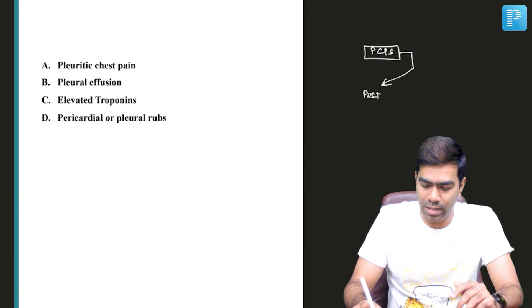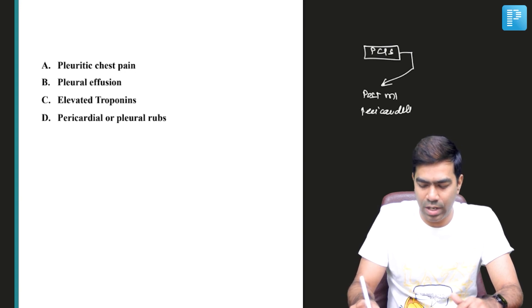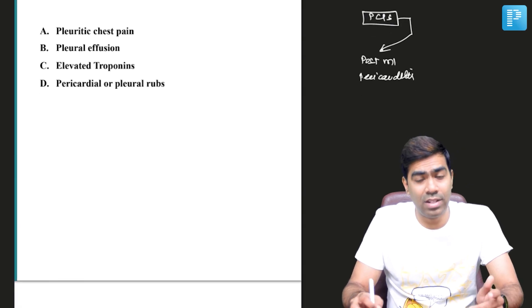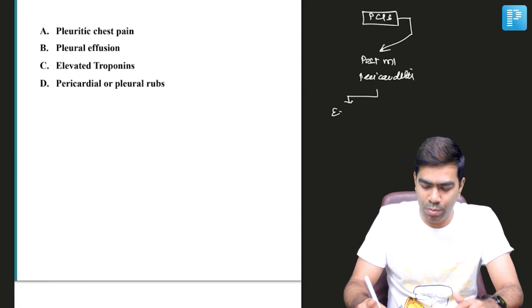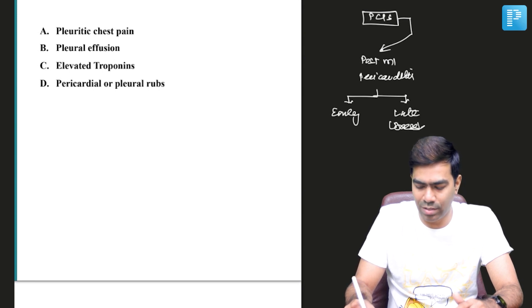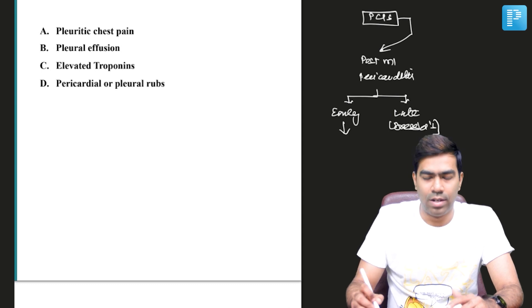The first type is post-MI pericarditis, which usually happens after STEMI. Post-MI pericarditis can be further subdivided into early post-MI pericarditis and late post-MI pericarditis, which is also referred to as Dressler's syndrome.